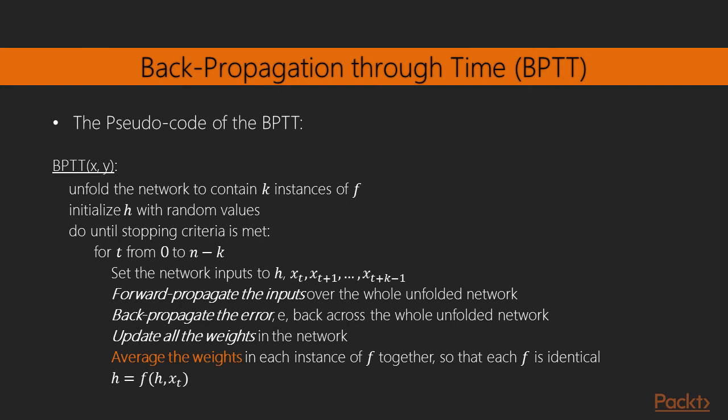Then we initialize the first hidden state with random values and start learning until we meet some criteria. Then for t ranging from 0 to n minus k we perform a series of steps. We set network inputs H, XT, XT plus 1 and so on and so forth until the next input pattern XT plus k minus 1. Then we forward propagate the inputs over the whole unfolded network and backpropagate the error. We update the different weights and then to get back to the rolled version of the RNN we average the weights in each instance of f together such that each f is identical. And in the end we update H such that for the next k steps we start with a good hidden state H.